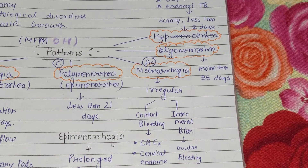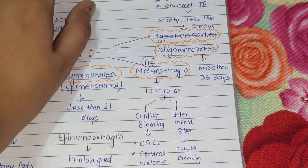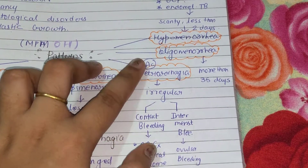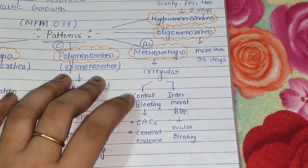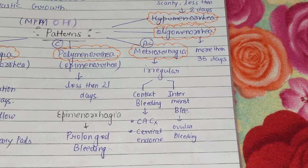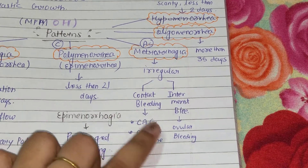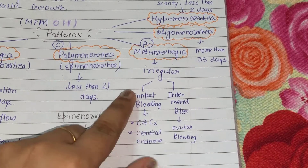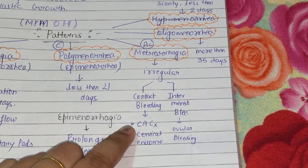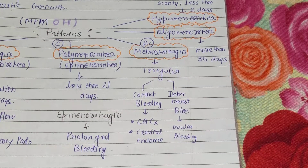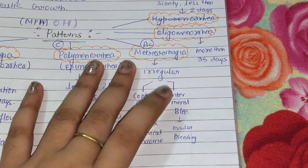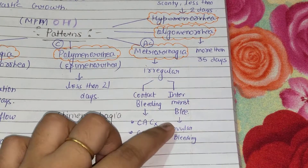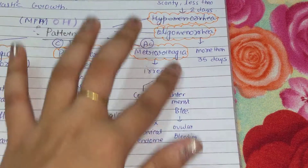Next comes Metrorrhagia. Metrorrhagia is acyclic bleeding — meaning irregular. Regularity is also a criterion for abnormal uterine bleeding. Metrorrhagia means irregular, acyclic bleeding. What happens in it is irregular — contact bleeding. If there is contact in that particular part there is bleeding, like in cases of cervical cancer or cervical endometriosis. There can also be intermenstrual bleeding — bleeding between two menses — which we call ovular bleeding.